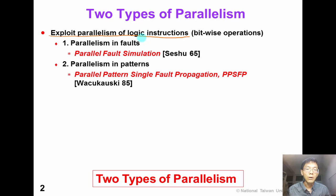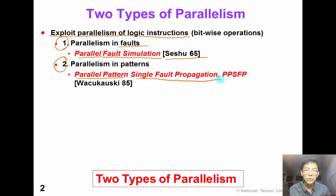There are two types of parallelism. As early as 1965, a researcher proposed a parallel fault simulation in terms of faults — it is called parallel fault simulation. Twenty years later, Dr. Wojcikowski also proposed another parallelism in terms of patterns. They call it parallel pattern single fault propagation, or PPSFP in short. In this video, we will introduce these two types of parallelism.